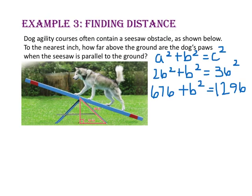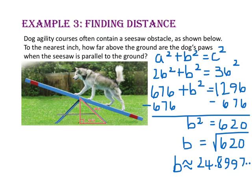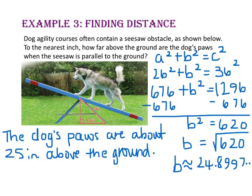Subtract 676 from both sides and b squared equals 620. Take the square root of both sides and b equals the square root of 620. Since in real life we don't express a distance in radical form, we'll take the square root of 620 and round. Since our question asked us to round to the nearest inch, we use the 8 to round 24.8997 up to 25 inches. So the dog's paws are about 25 inches above the ground when the seesaw is parallel to the ground.